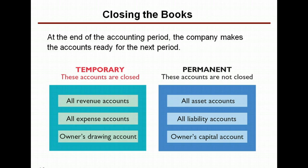The formal process of closing the books happens at the end of the accounting period and it gets the accounts ready for the next period. Some accounts are closed — taken to a zero balance — and some are not. The accounts that are closed are the ones that affect owner's equity. We close revenues, we close expenses, and we close draws. You don't need to close the investment account because investments were made directly to owner's equity to start with.